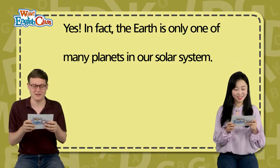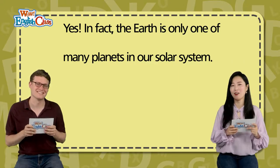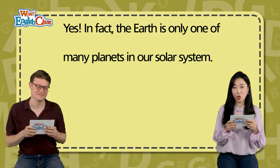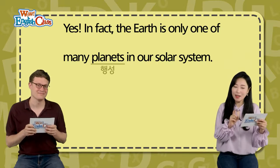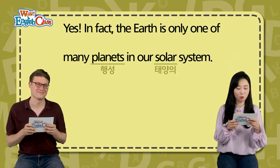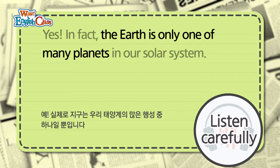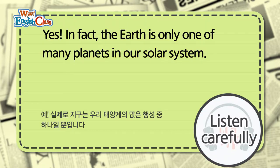Yes. In fact, the earth is only one of many planets in our solar system. 왜 갑자기 yes 할까요? 앞에 내용하고 연결이 되는 거죠. 이웃이 있을까요? Yes. 그렇죠. In fact, 사실 the earth is only one, 하나일 뿐이에요. Of many planets, 많은 행성들 중에 고작 하나일 뿐입니다. In our solar system, 태양계에 있는 많은 행성들 중에 하나일 뿐입니다.